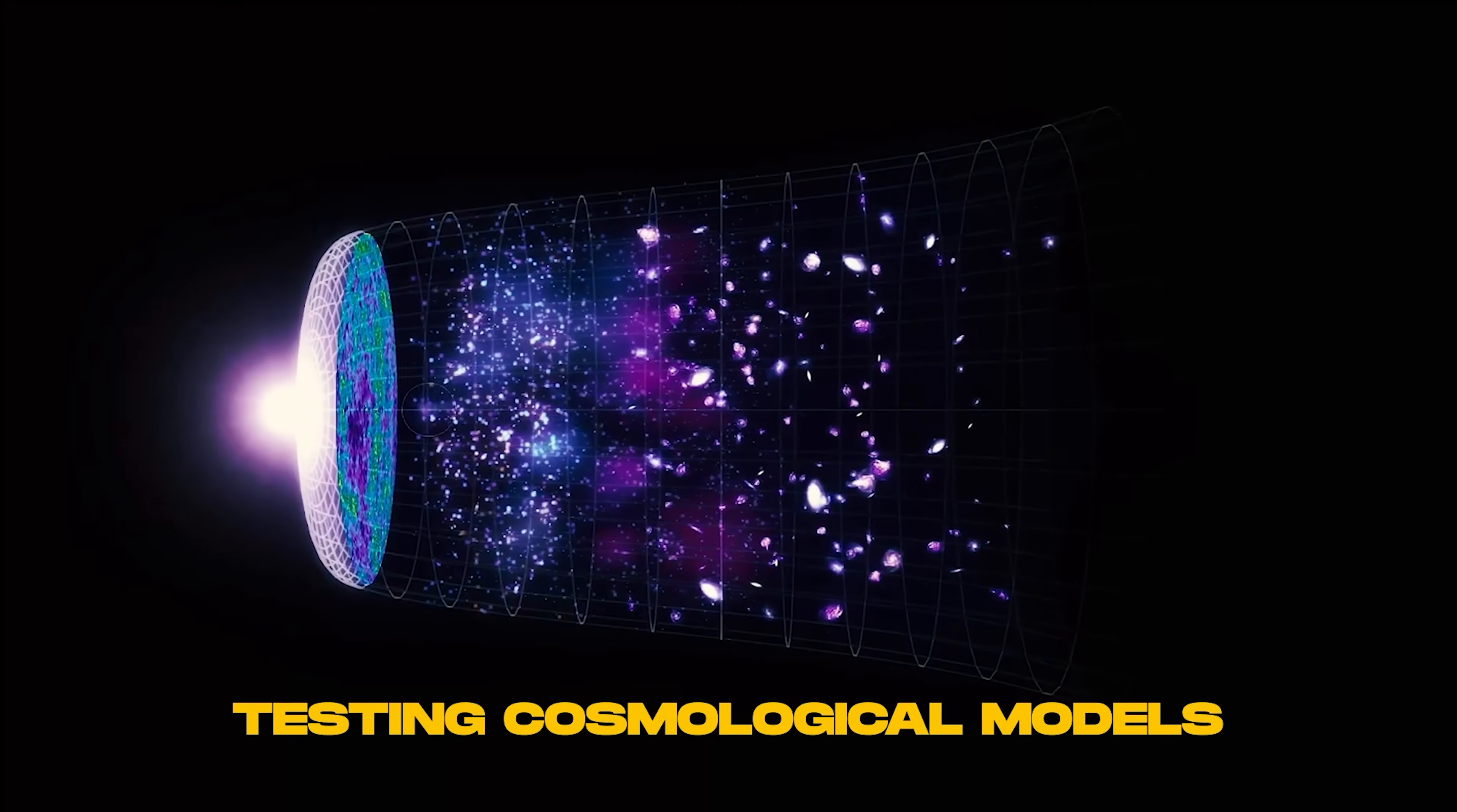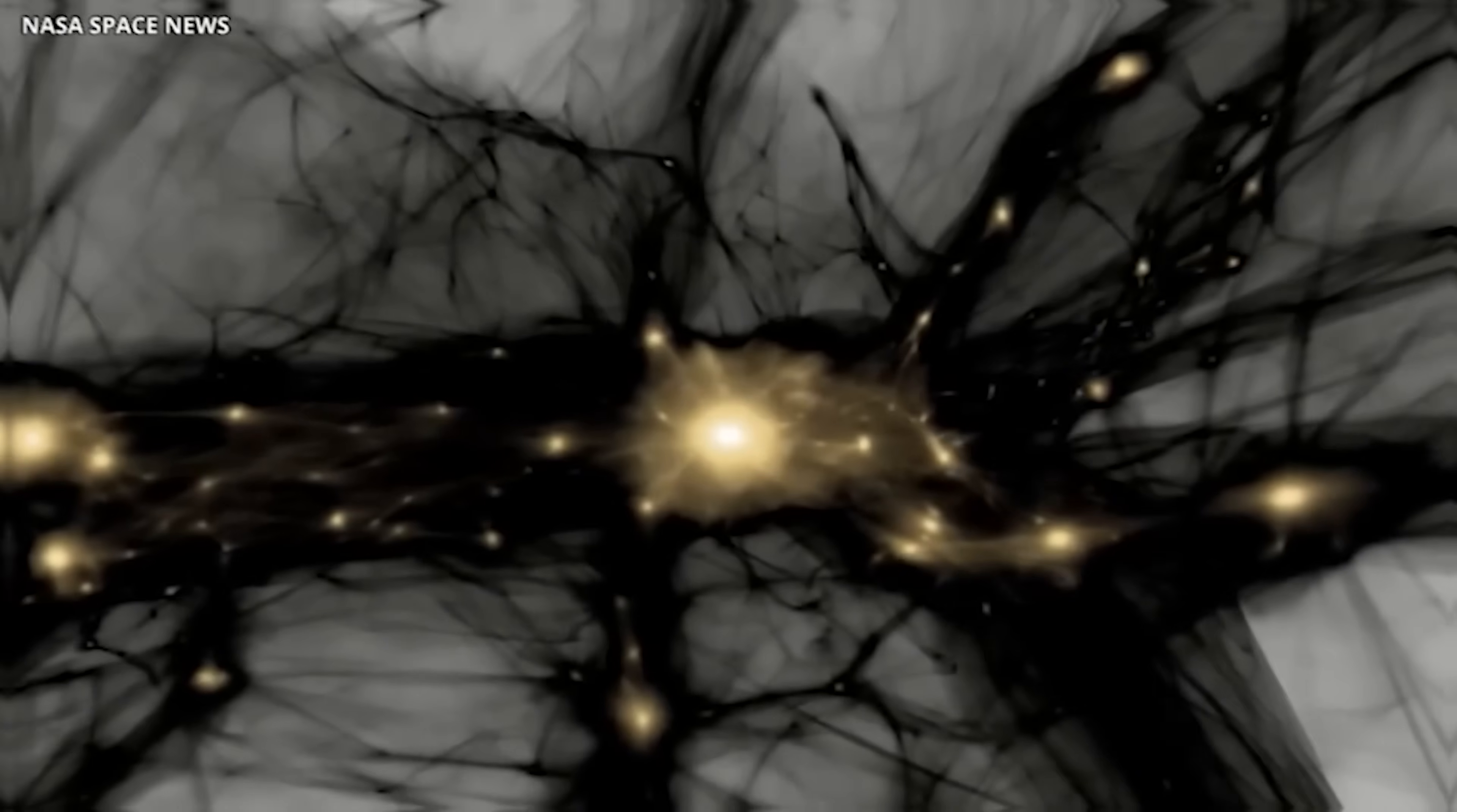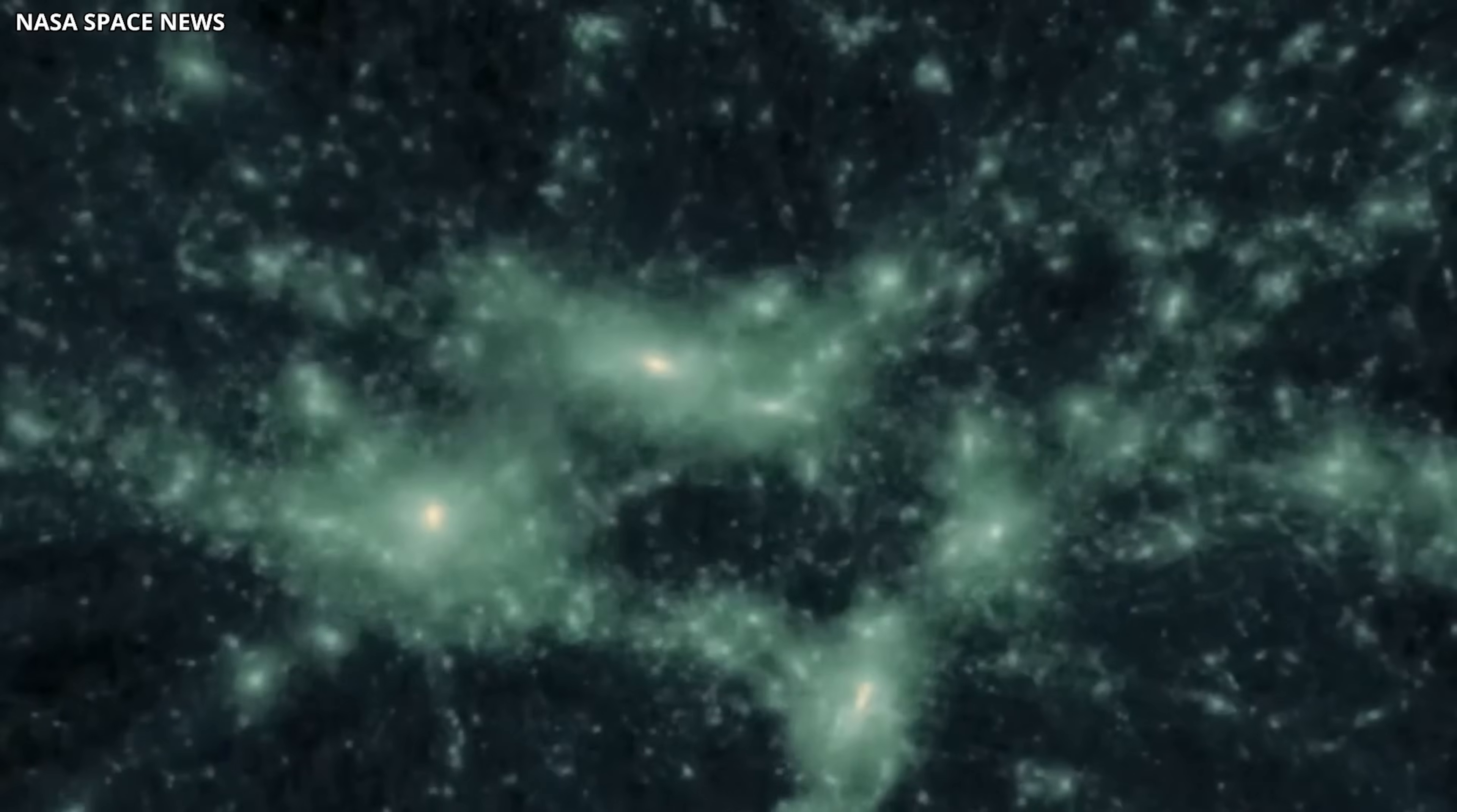Testing cosmological models. The standard cold dark matter model predicts halos around galaxies and groups, but anomalies like this help refine our understanding of halo formation and evolution.